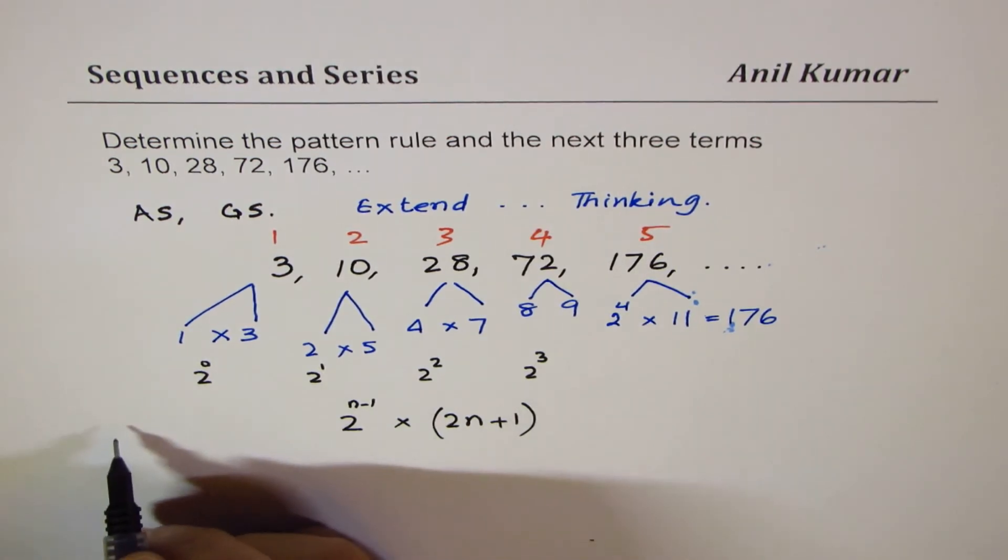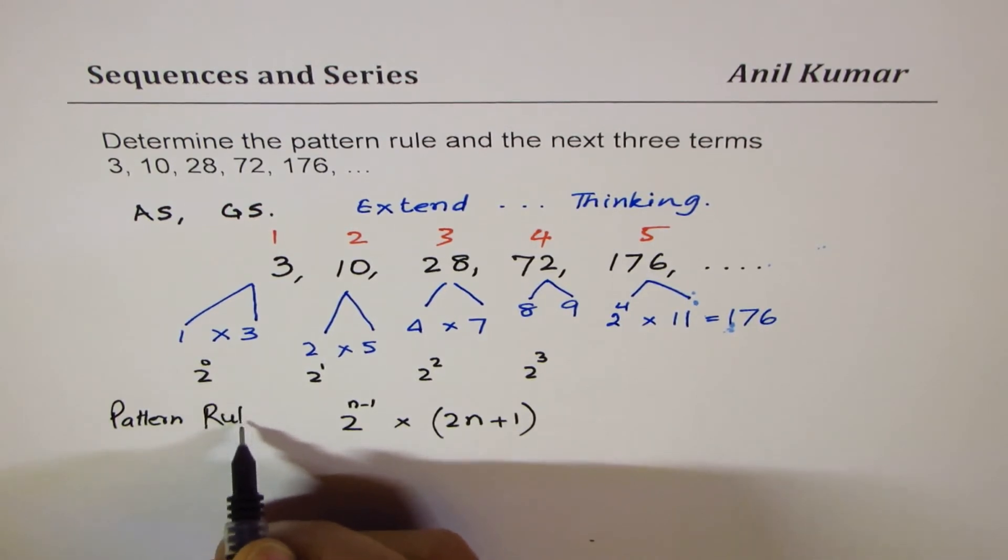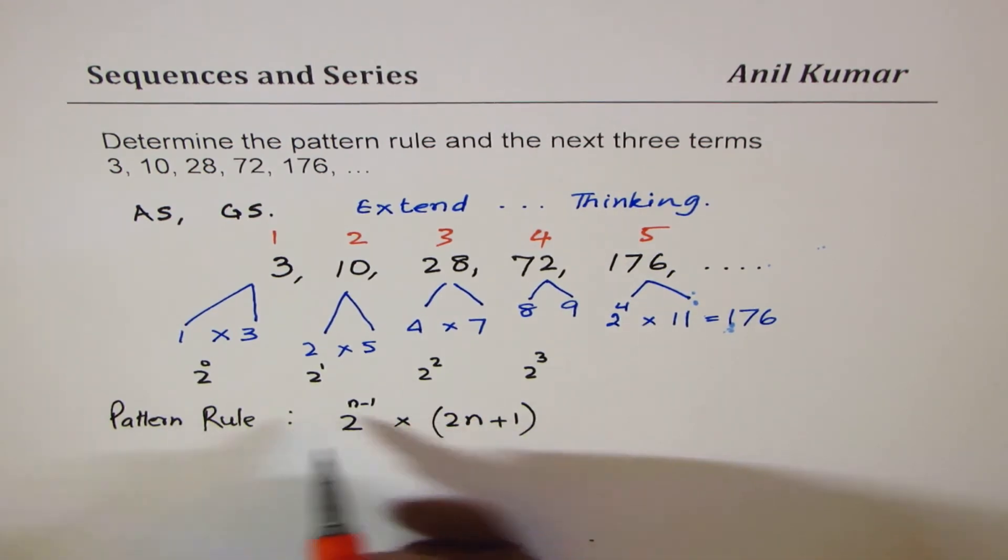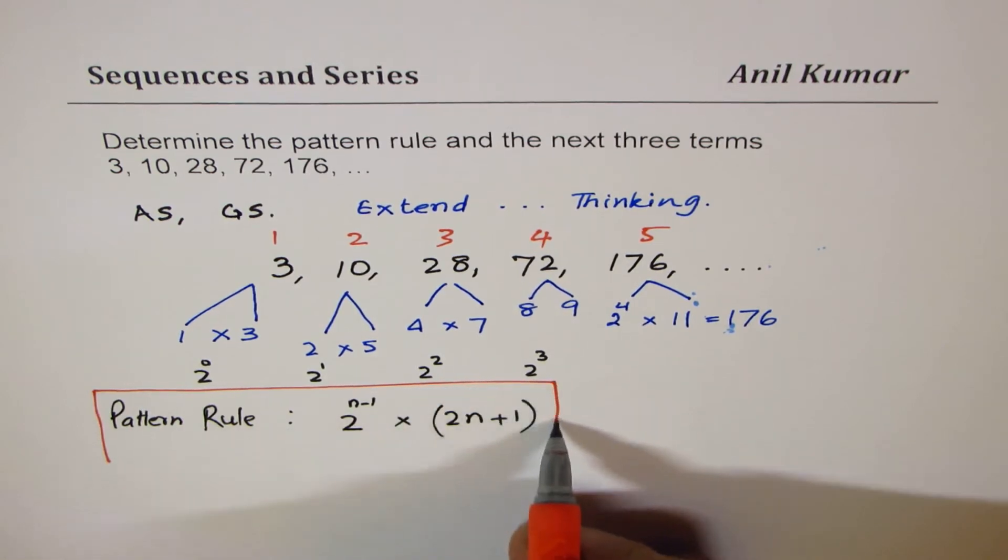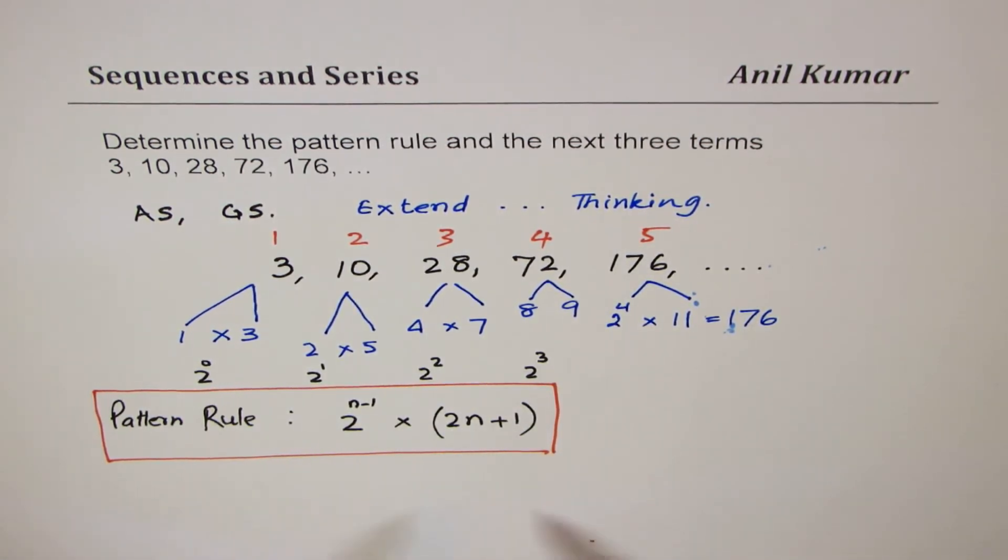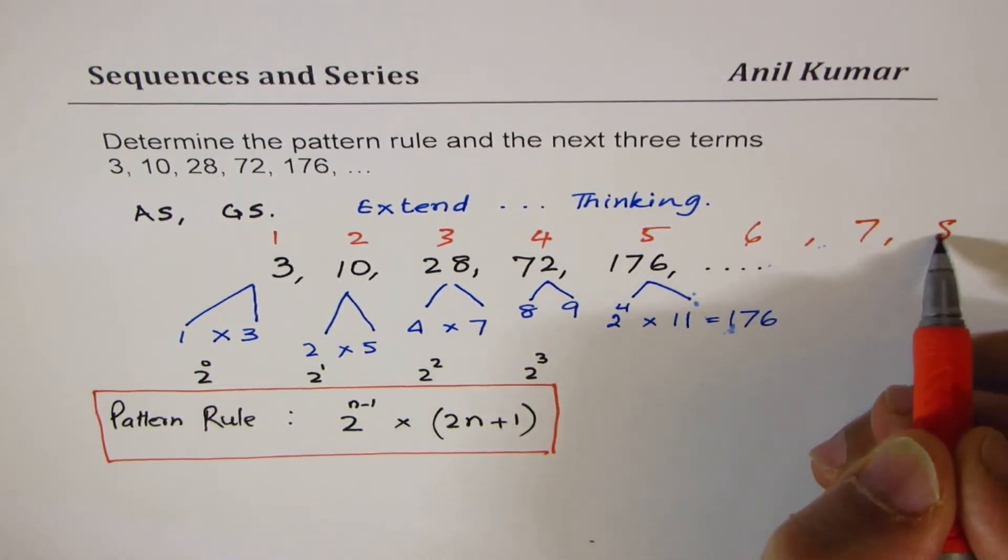is 2 to the power of n minus 1 times 2n plus 1, correct? Now, using this rule, we can find 6th, 7th, and 8th terms.